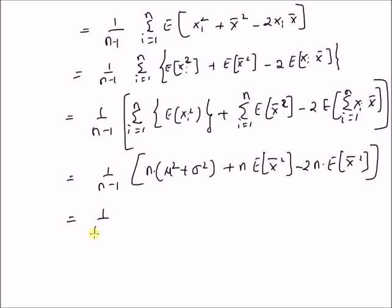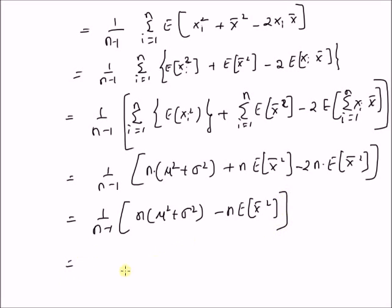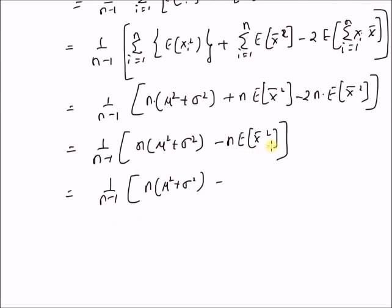This is equal to 1 by n minus 1 times n times mu squared plus sigma squared, plus minus n times expectation of x̄ squared. From the previous video, we have seen that expectation of x̄ squared — that is, the second moment of x̄ — is mu squared plus sigma squared by n. Therefore, this becomes n times mu squared plus sigma squared upon n.